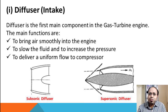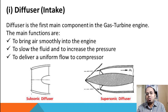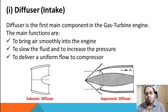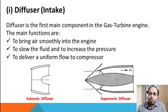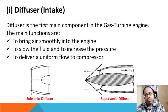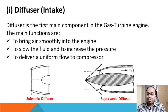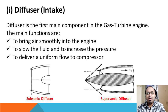There are two types of diffusers used in aero engines, depending on the category of aircraft. For subsonic aircraft we use a subsonic diffuser, and for supersonic aircraft we use a supersonic diffuser.